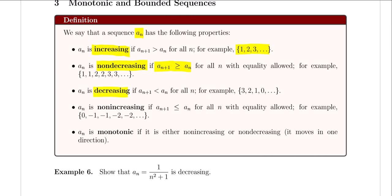We say that a sequence is decreasing if a_{n+1} is less than a_n — meaning the next term is smaller than the previous one. An example is 3, 2, 1, 0, and so forth. We say that a sequence is non-increasing if a_{n+1} is less than or equal to a_n for all n, with equality allowed. An example of a non-increasing sequence is 0, negative 1, negative 1, negative 2, negative 2, and so forth. A very important concept is the monotonic sequence: a sequence is monotonic if it is either non-increasing or non-decreasing — it moves in one direction.